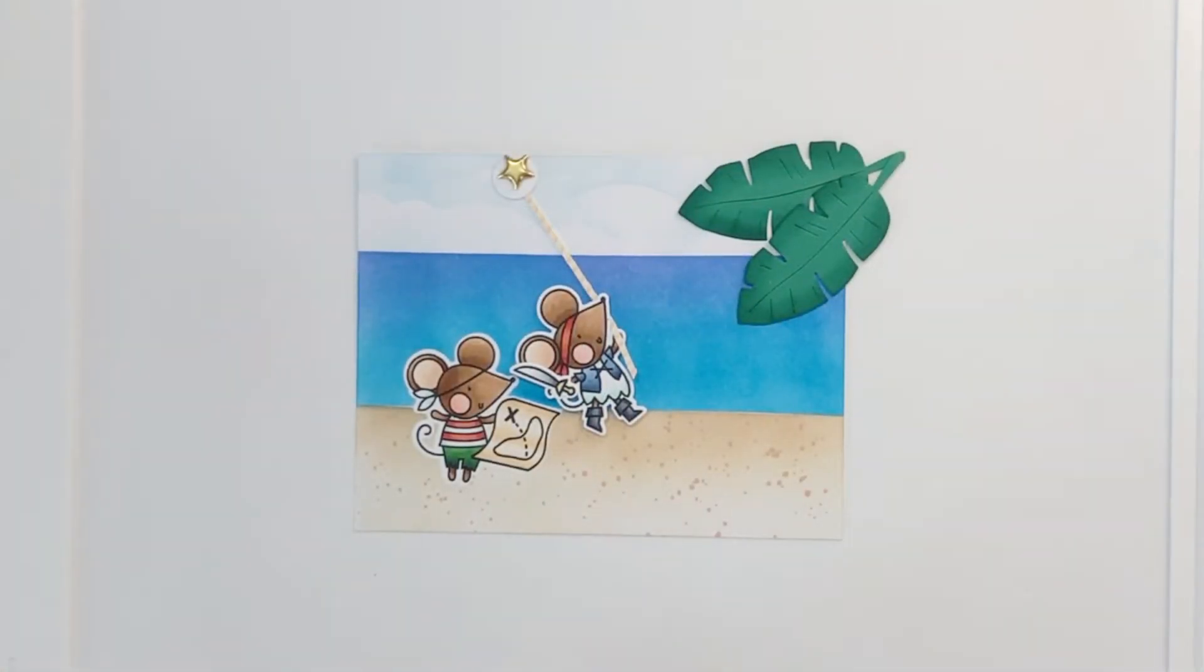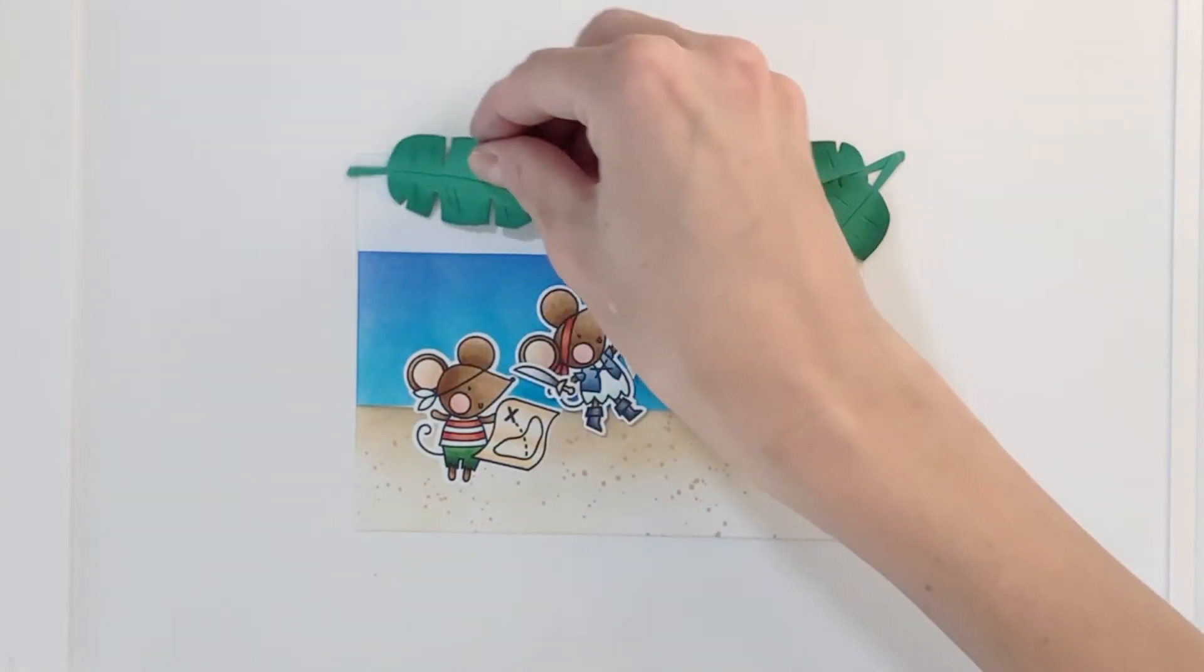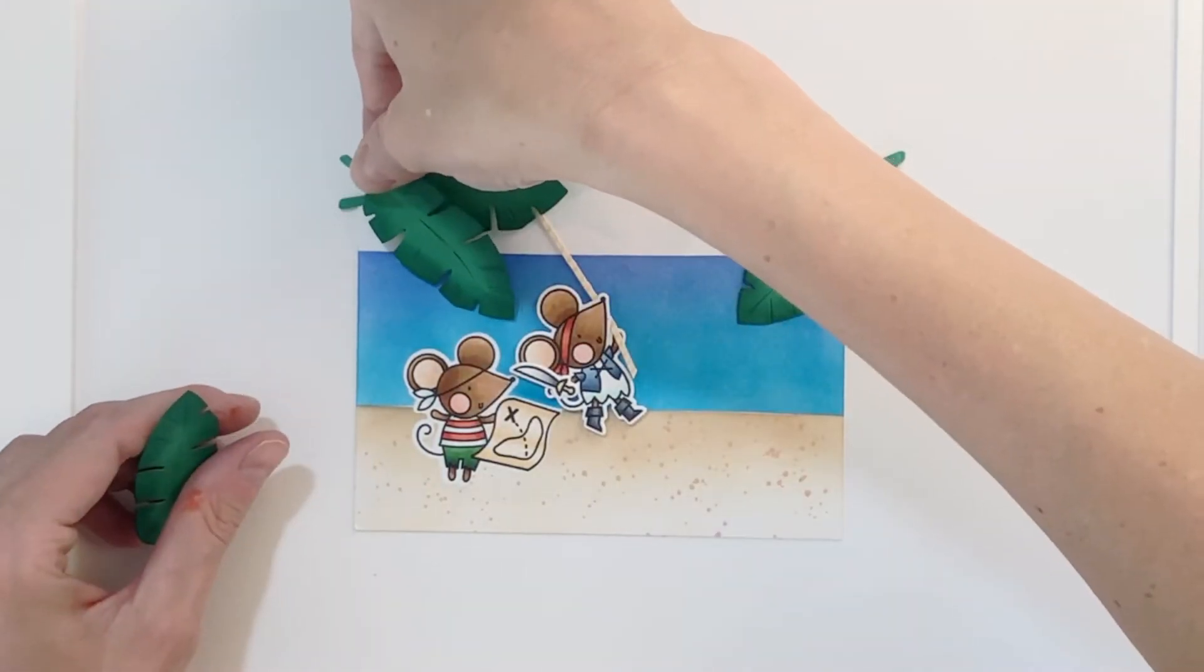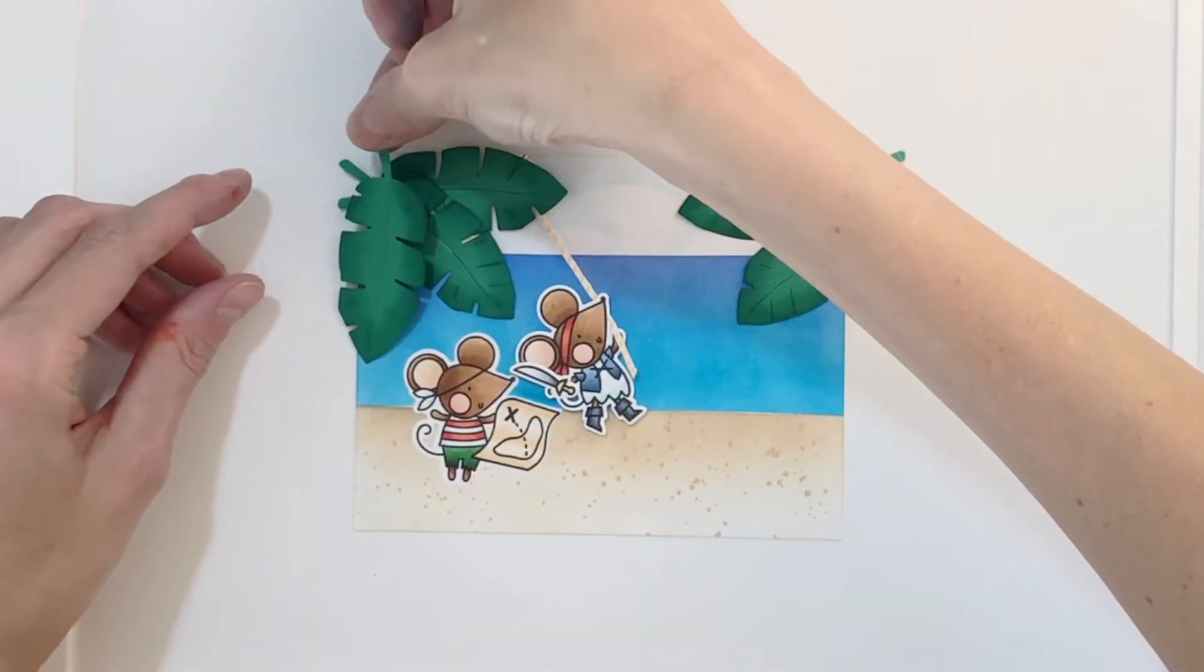Now I need these leaves to cover up mainly that brad. That's why I have these leaves here. So I positioned two on the right and now I'm carefully positioning some leaves on the left to definitely make sure that I cover up that brad.